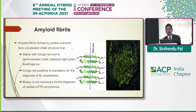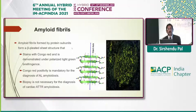The typical finding is apple-green birefringence seen under polarized light when stained by Congo red, as you can see in this photograph. Congo red positivity is mandatory for the diagnosis of amyloidosis, but perhaps is not necessary for the diagnosis of cardiac ATTR amyloidosis.